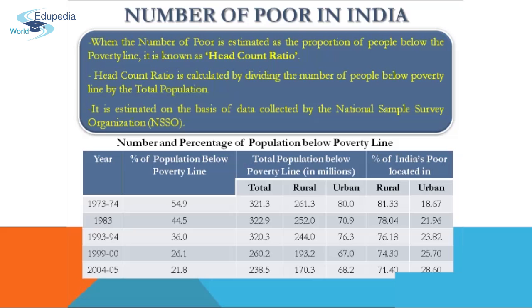The official data on poverty is made available to the public by the Planning Commission. It is estimated on the basis of consumption expenditure data collected by the NSSO, that is the National Sample Survey Organization. On this basis, comparable estimates of poverty are available at national and state levels from 1973-74 onwards.